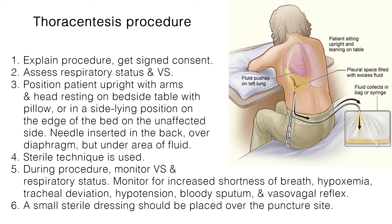The procedure for a thoracentesis includes the following steps. Step 1: Explain the procedure and obtain a signed consent form. Emphasize the importance of not moving or coughing and breathing quietly during the procedure. Step 2: Assess the patient's respiratory status and vital signs, including pulse oximetry. Step 3: Position the patient upright with their arms and head resting on a bedside table with a pillow. If the patient is unable to sit, they may be placed in a side-lying position on the edge of the bed on the unaffected side.